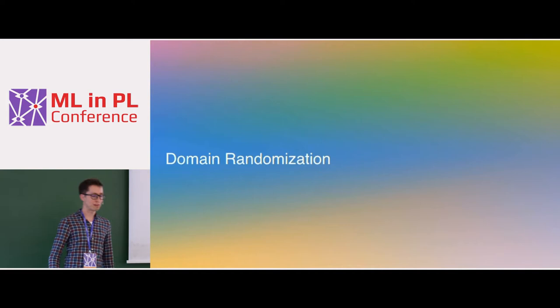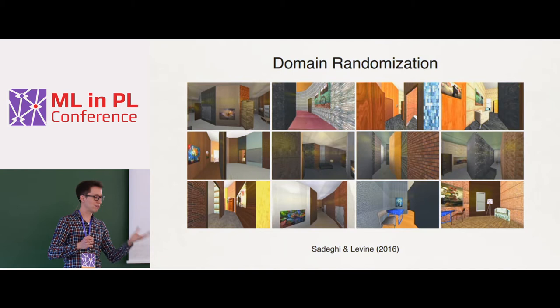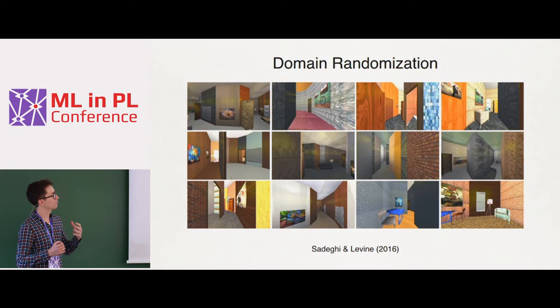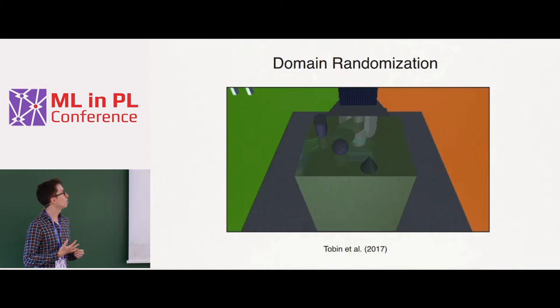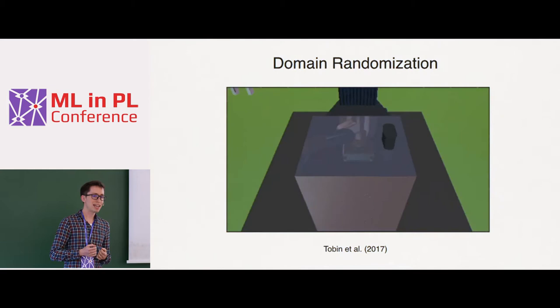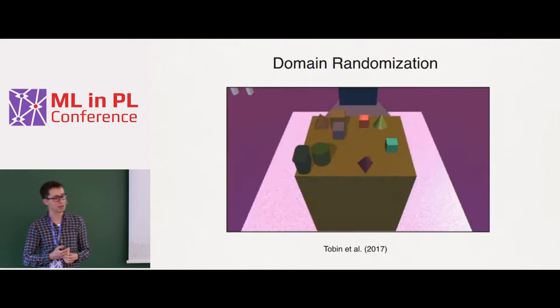We tackled this challenge with a technique called domain randomization. One of the first examples was work by Sadeghi and Levine in 2016, who trained a collision avoidance policy for a quadcopter in simulation with lots of varied textures on walls and furniture, then deployed it in the real world — and it just worked, despite not being trained on a single real image. We later used the same technique at OpenAI to train a vision network to predict object position and orientation, and it turns out you can use even completely random textures and the network still transfers to real-world images.